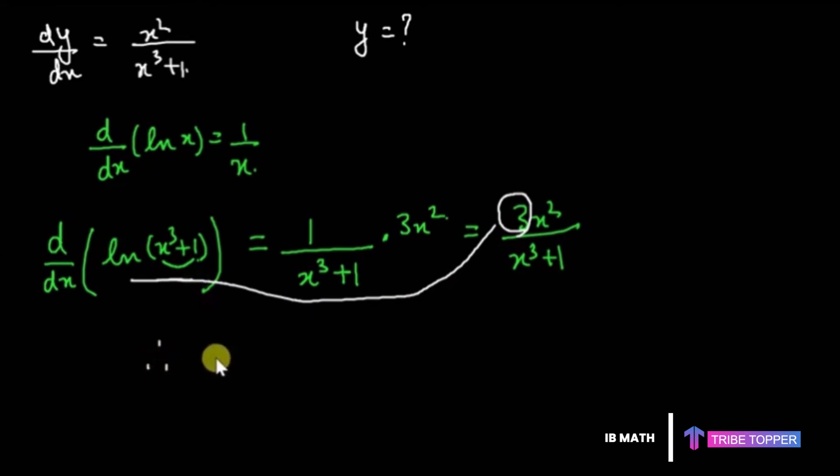Therefore d/dx of ln of x cubed plus 1 upon 3 is going to give me x squared over x cubed plus 1. So if this is my function, then the derivative is going to be x squared over x cubed plus 1. So we have found out y.